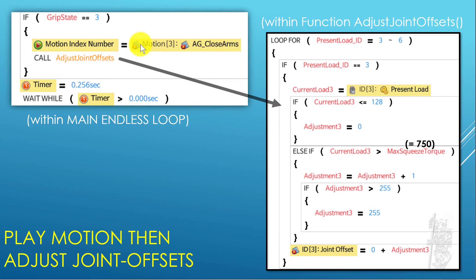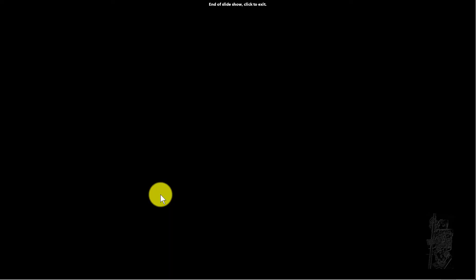You can see that same trick again. If you play a motion and adjust joint offset, in a way you can get motion out of stillness again. But this time, it's based on the load on the specific servo. So let's see how it works.